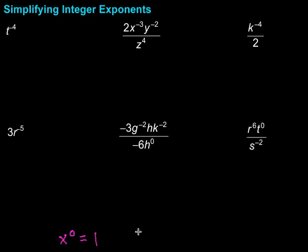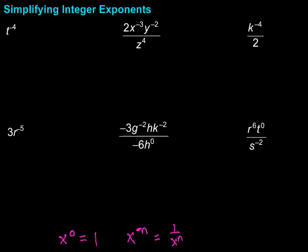The second thing we're going to look at is if we have a negative power. So if we have x to the negative n power, that's going to be equal to 1 over x to the n power. To get rid of that negative power, what we do is we flip the x down to the denominator, and then we take it to that positive power.